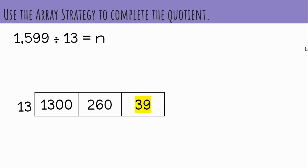When we decompose 1,599, we would get 1,300 plus 260 plus 39. Now divide.